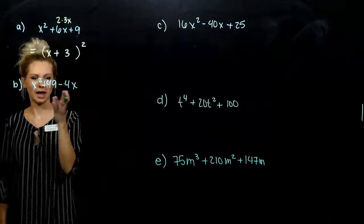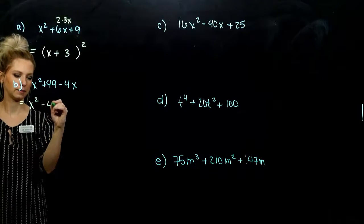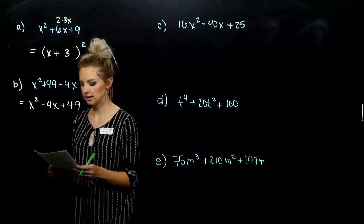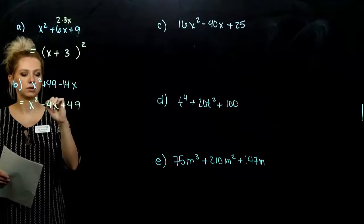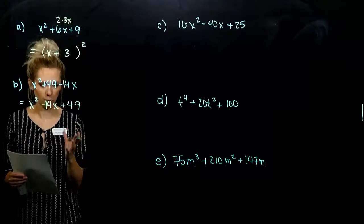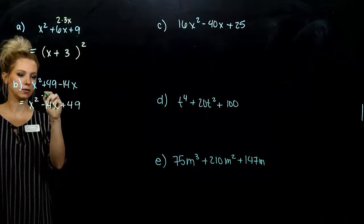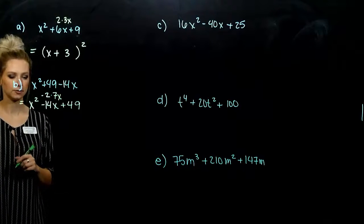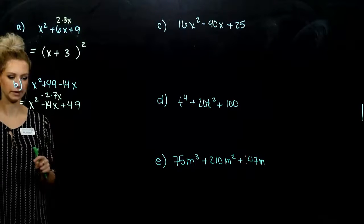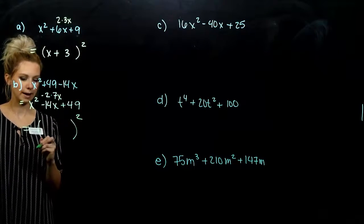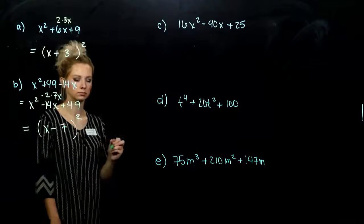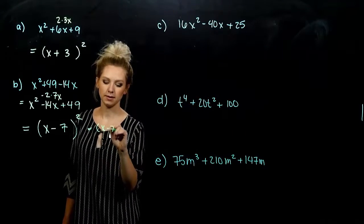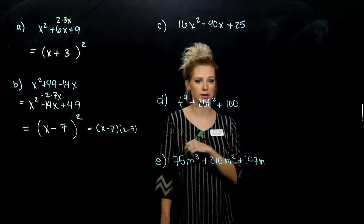Next one is out of order, so the first thing we want to do is switch it around. We've got positive, positive, and they're squares. Can we break up the middle term into 2 times the square root of each? If I take negative 2 out of 14, I'm left with 7x — the square root of the first and the square root of the second. So I know that this is going to factor into the binomial x minus 7, squared. If you're not sure, you can always write it out, foil it, and check that you get back to the original.